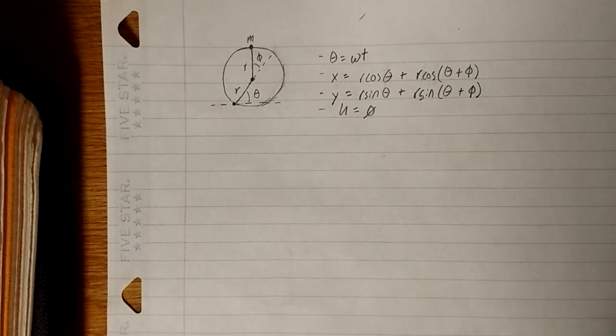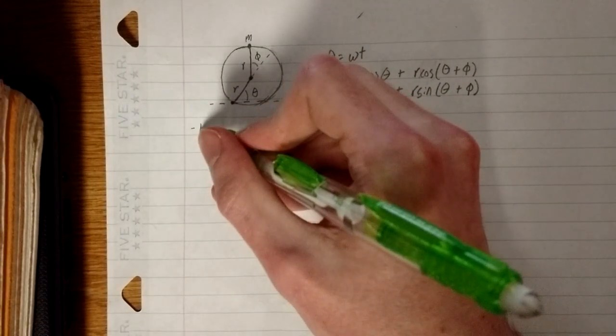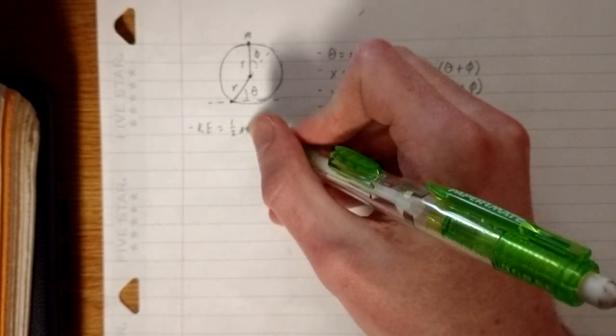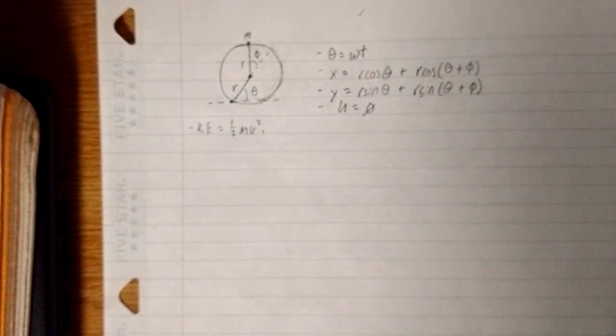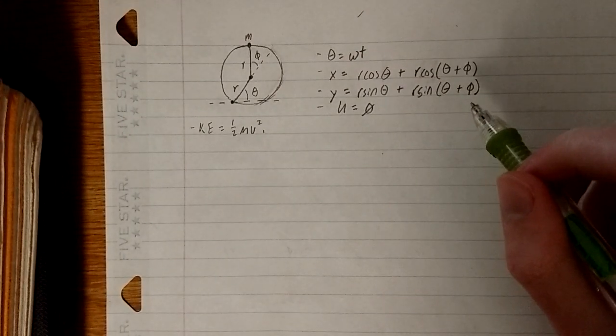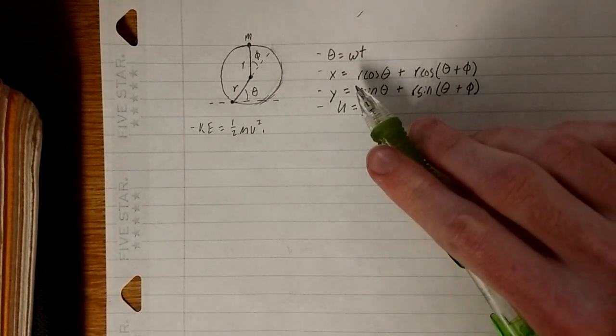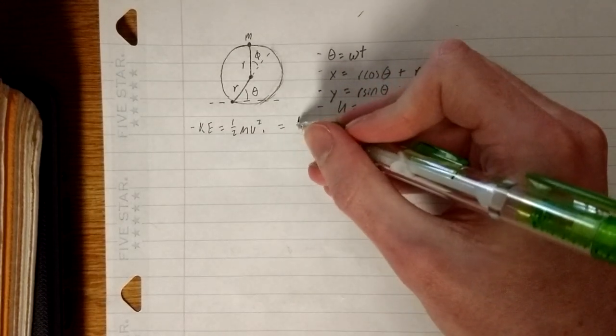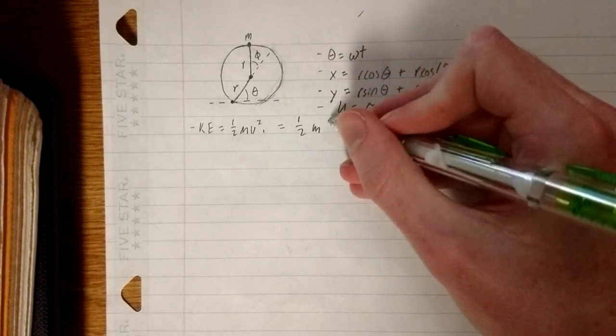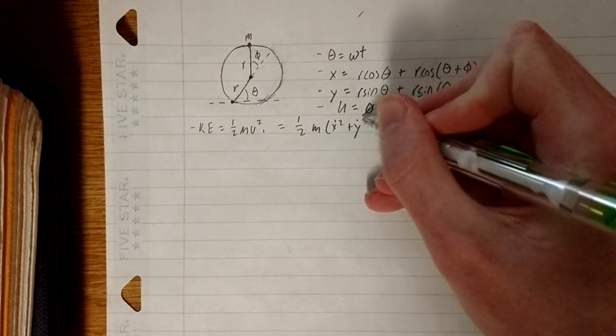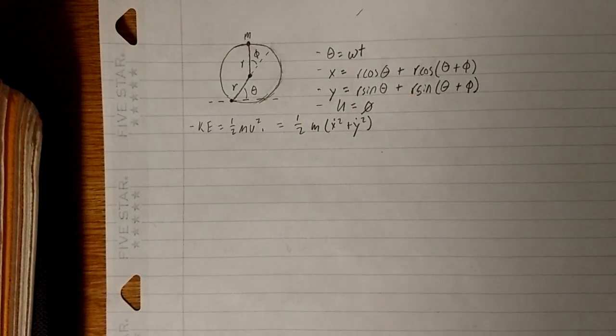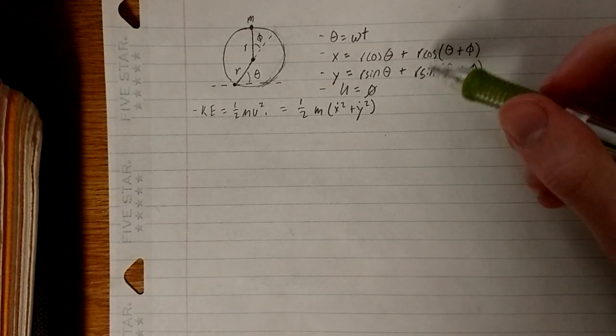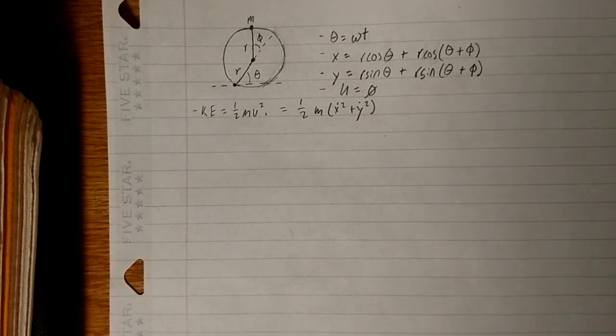Now, that's the easy part. What we need now is kinetic energy. And as we know, kinetic energy is one half mass v squared. Now in order to try and get v squared, we're going to need x dot and y dot, because that's equal to one half m x dot squared plus y dot squared. Fairly straightforward. So we just need to take care of deriving both of these with respect to time.